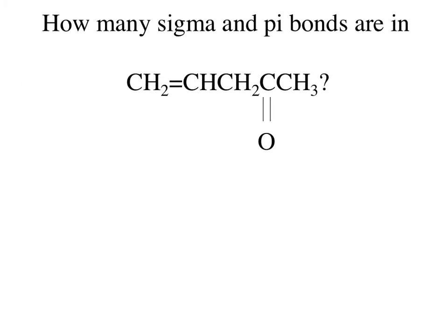So how many sigma and pi bonds are in this structure? I'm going to draw this out very painfully so we can look at all the single bonds that are here. Because the hydrogens can only have one bond on them. So this is a collapsed version of a Lewis structure.